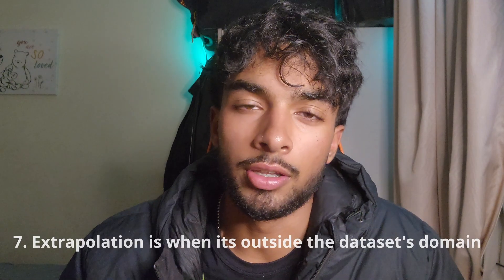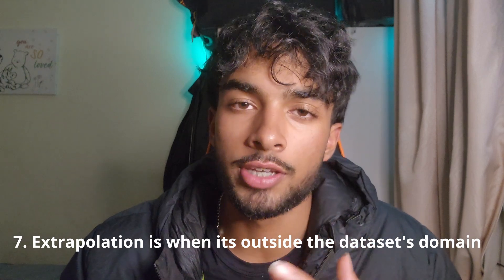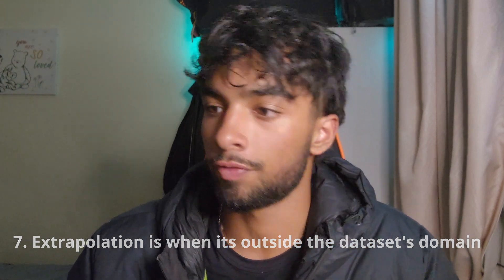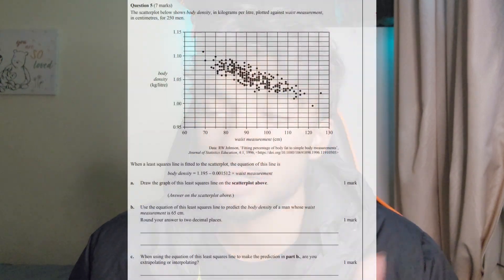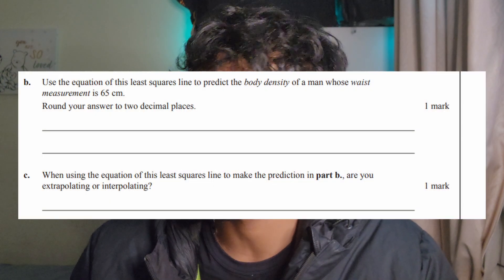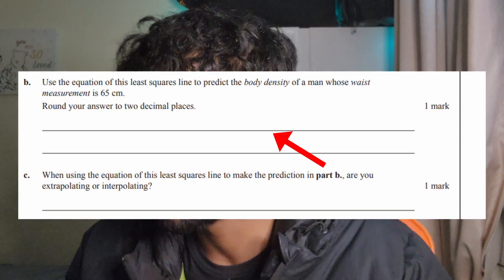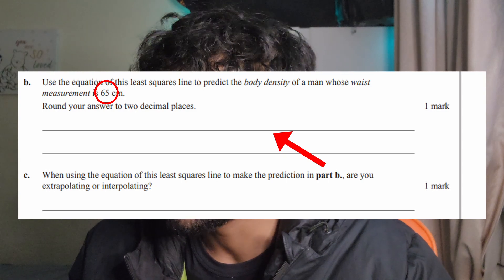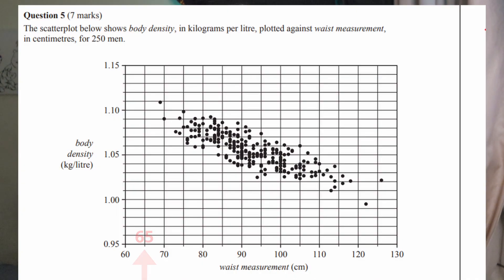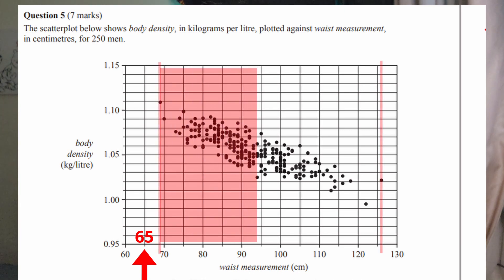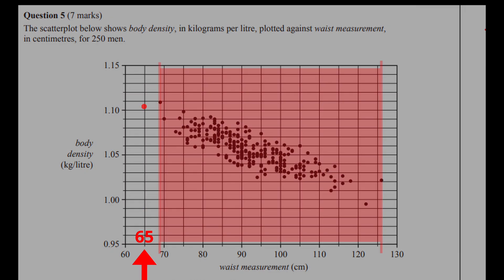Number 7: extrapolating data is when it's outside the data set's domain, not the graph. When you make data predictions with a least squares regression line, you have to know whether it's an example of interpolation or extrapolation. The question here asks about 65cm. Now 65cm is in fact extrapolation, not interpolation, because it's outside the data set's domain. Even though 65cm can be plotted on this graph, it's still extrapolation.